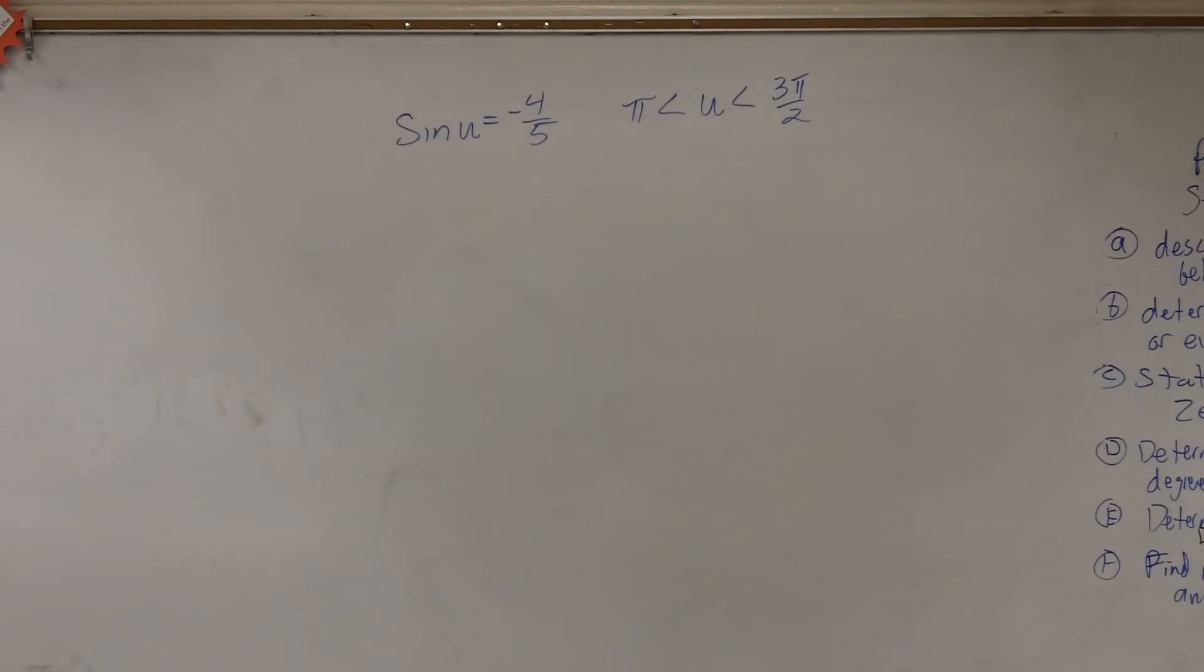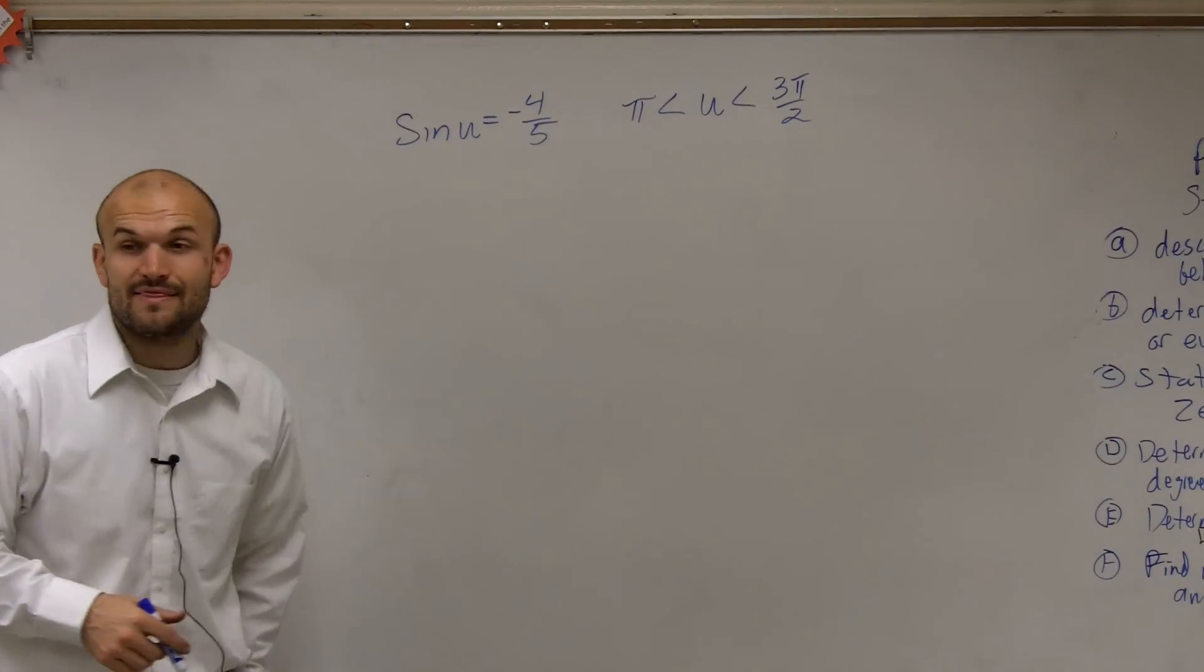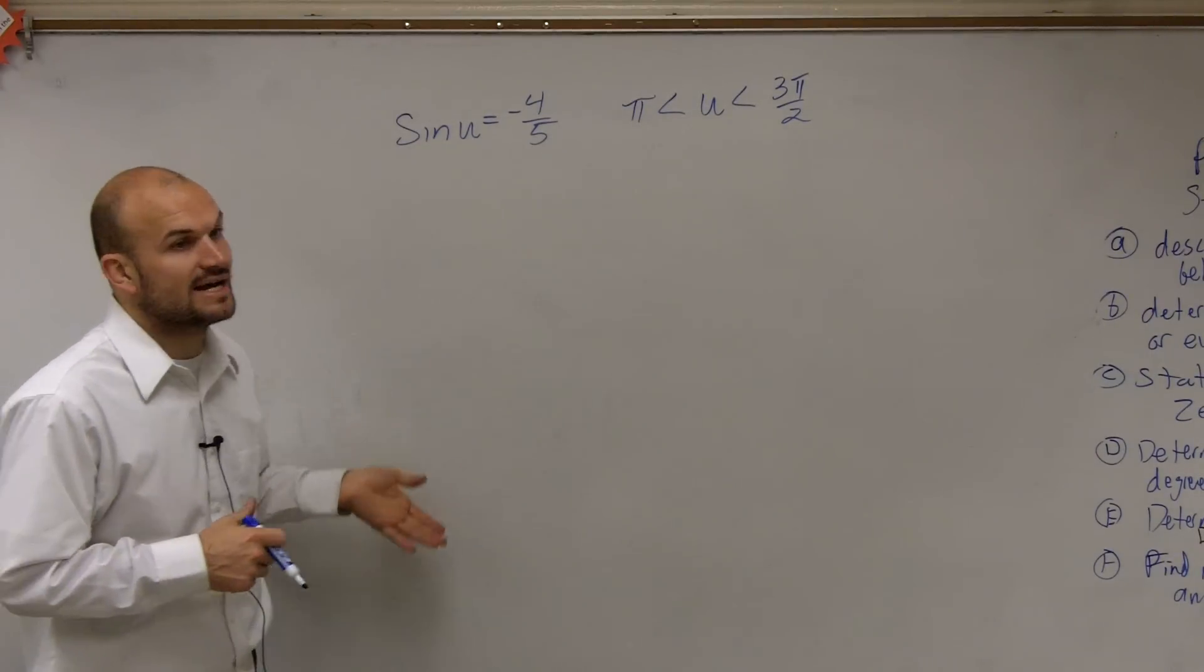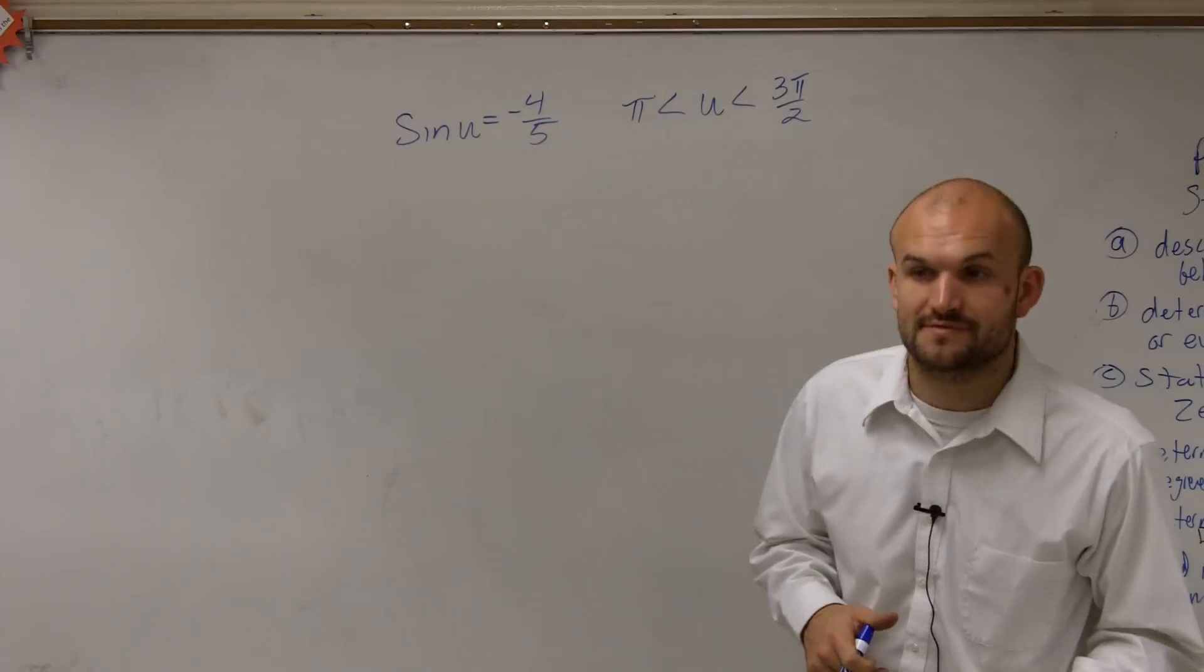All right, so for this one I say it has sine of u equals negative 4 over 5, and then I have a constraint of pi is less than u, which is less than 3 pi halves.